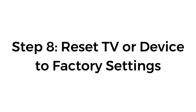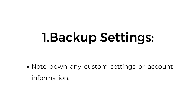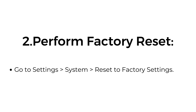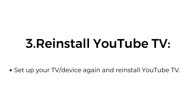Step eight: reset your TV or device to factory settings. First, back up settings by noting any custom settings or account information. Then perform a factory reset by going to Settings > System > Reset to Factory Settings, and reinstall YouTube TV afterward.